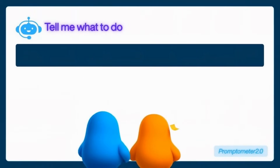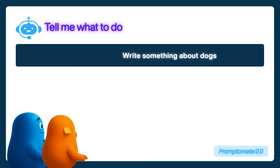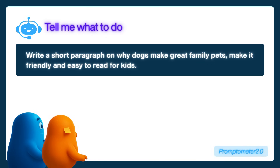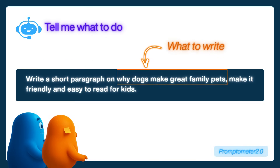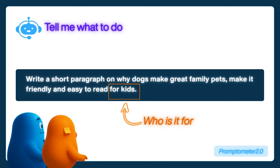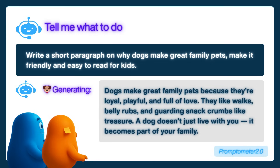Here's what I mean. If you say, 'Write something about dogs,' that's vague. The AI doesn't know if you want a story, a poem, or a vet report. But if you say, 'Write a short paragraph about why dogs make great family pets, make it friendly and easy to read for kids,' now that's clear. It knows what to write, how to sound, and who it's for. That's the power of a good prompt.